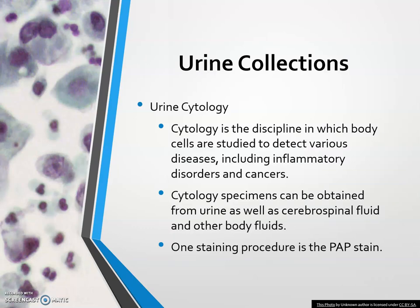Urine cytology is a discipline in which body cells are studied to detect various diseases, including inflammatory disorders and cancers. Cytology specimens can be obtained from urine, cerebrospinal fluid, and other bodily fluids. One staining procedure is a Pap stain, used to detect HPV in females or cervical cancer when viewed under a microscope.